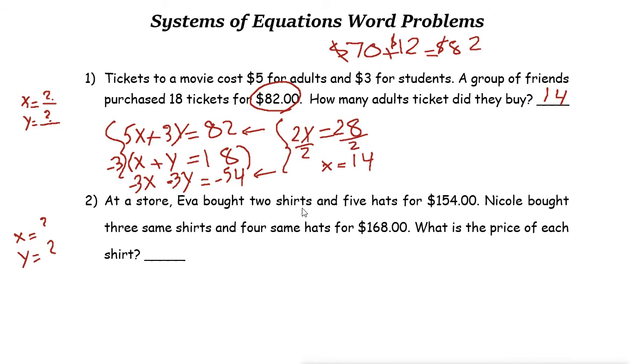We know that 2 shirts means 2X plus 5 hats or 5Y equals 154. And we know that 3 shirts or 3X plus 4 hats or 4Y equals 168. Now we have a system of equations. We cannot use the elimination method just by adding or subtracting two equations, but we can multiply this by negative 3 and this one by 2 to make the X terms cancel out.